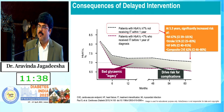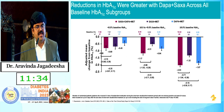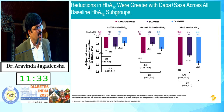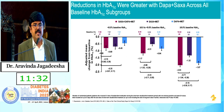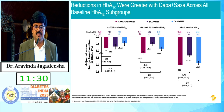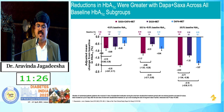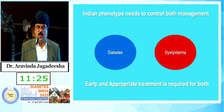This bad glycemic legacy has to be driven off by treating aggressively from the initial stages of type 2 diabetes management. There is a greater reduction in HbA1c with dapagliflozin and saxagliptin across all baseline HbA1c groups.